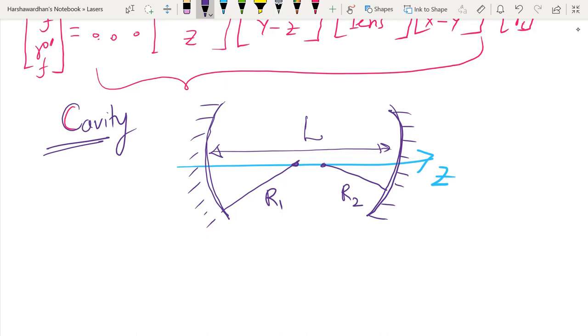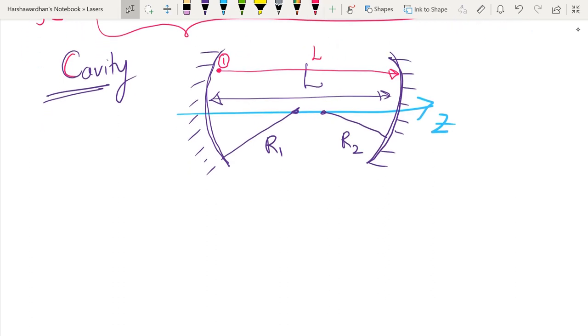Now let us see how we can write the problem of the field bouncing back and forth within such a system using the ABCD matrix. So what I will do is basically I will go through this cavity in a single round trip and then figure out how to write that in the ABCD matrix language. So let me begin here. This is my step number 1. I go around to the other direction. I travel a free space distance of L. So this matrix I am writing as the ABCD matrix corresponding to free space propagation of a distance L.